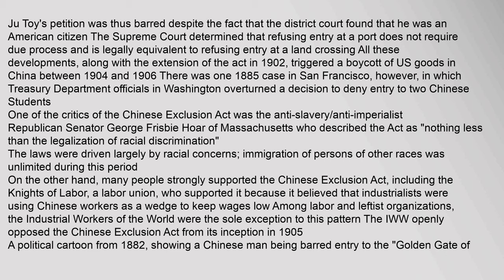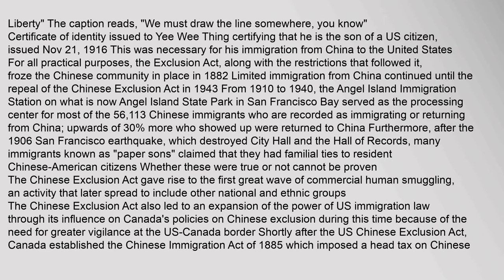The laws were driven largely by racial concerns; immigration of persons of other races was unlimited during this period. On the other hand, many people strongly supported the Chinese Exclusion Act, including the Knights of Labor, a labor union, who believed that industrialists were using Chinese workers as a wedge to keep wages low among labor and leftist organizations. The Industrial Workers of the World were the sole exception, openly opposing the Chinese Exclusion Act from its inception in 1905. A political cartoon from 1882 showed a Chinese man being barred entry to the 'Golden Gate of Liberty,' with the caption reading 'We must draw the line somewhere, you know.'